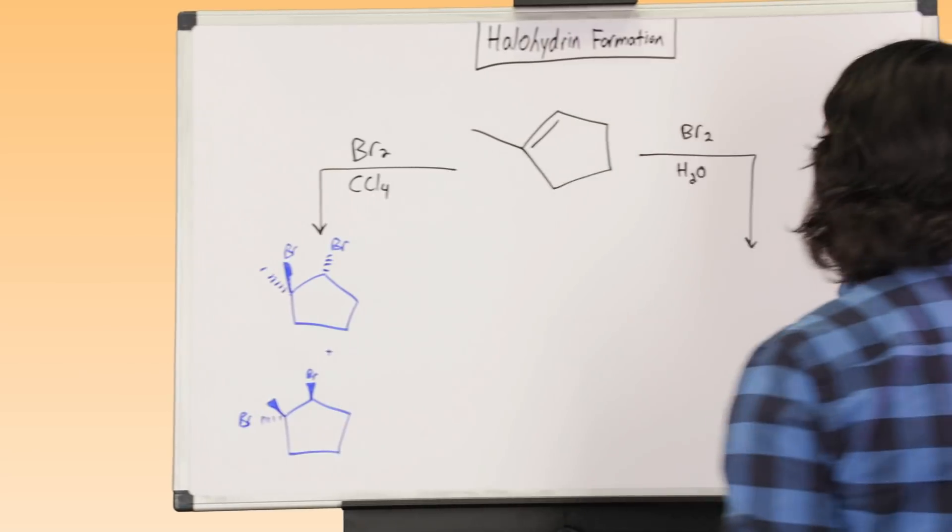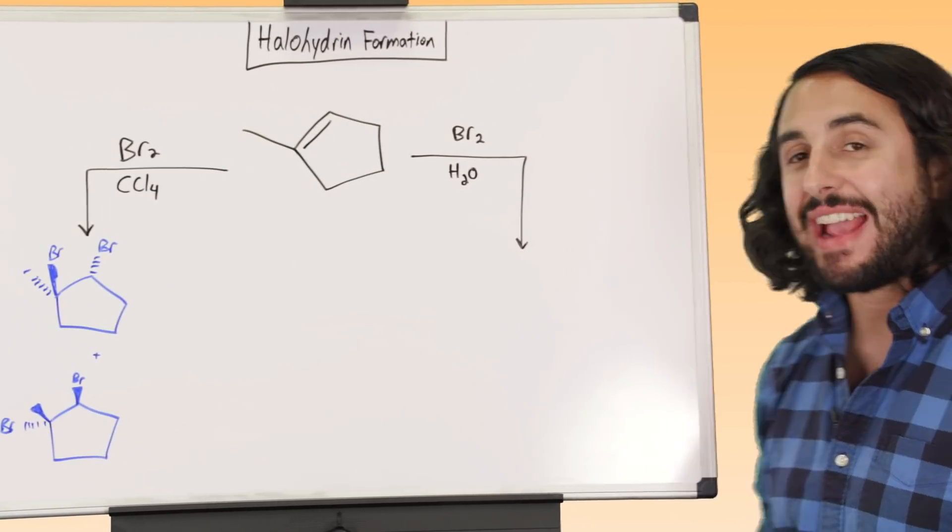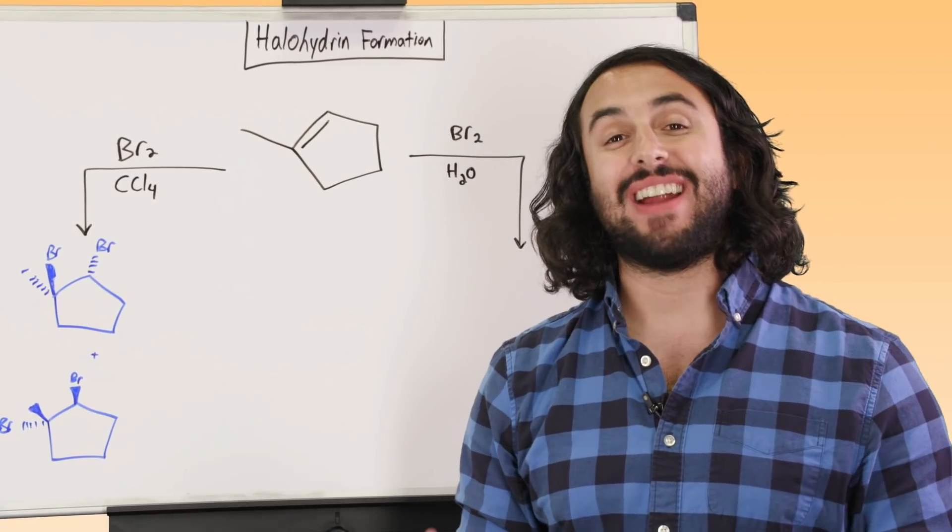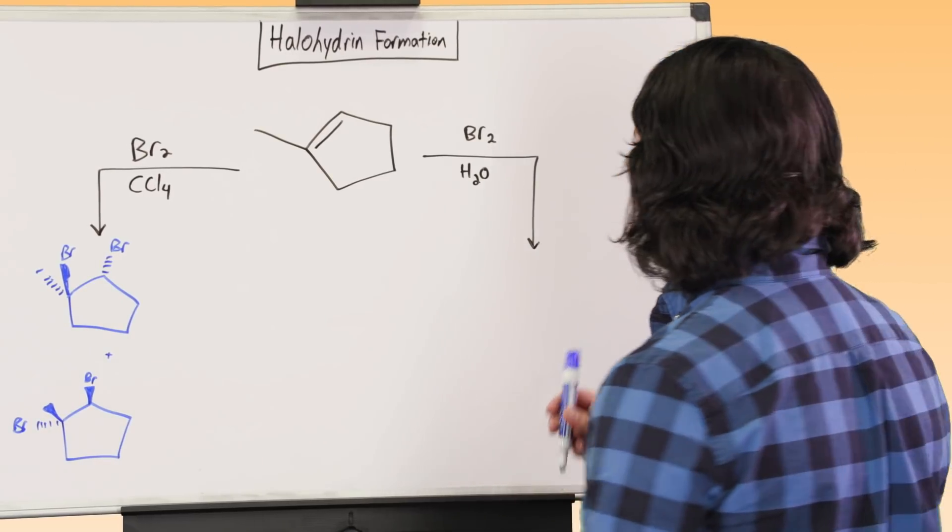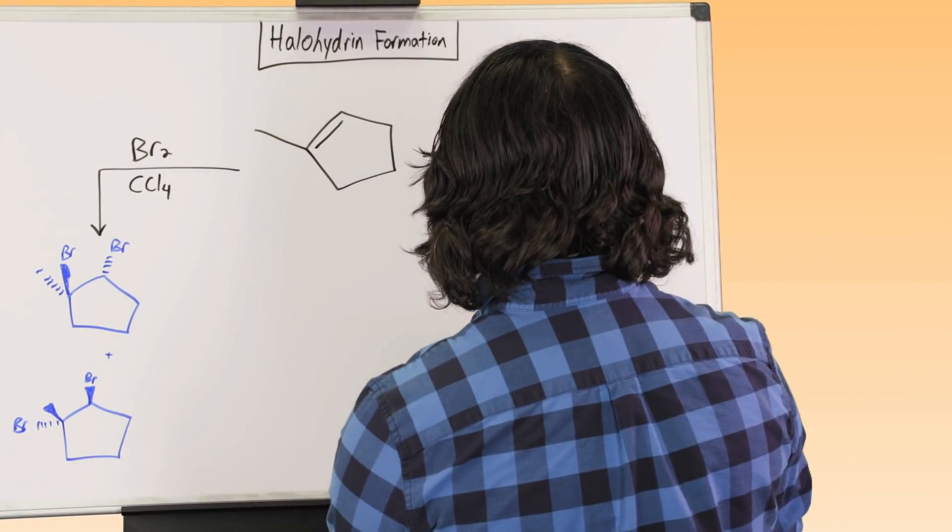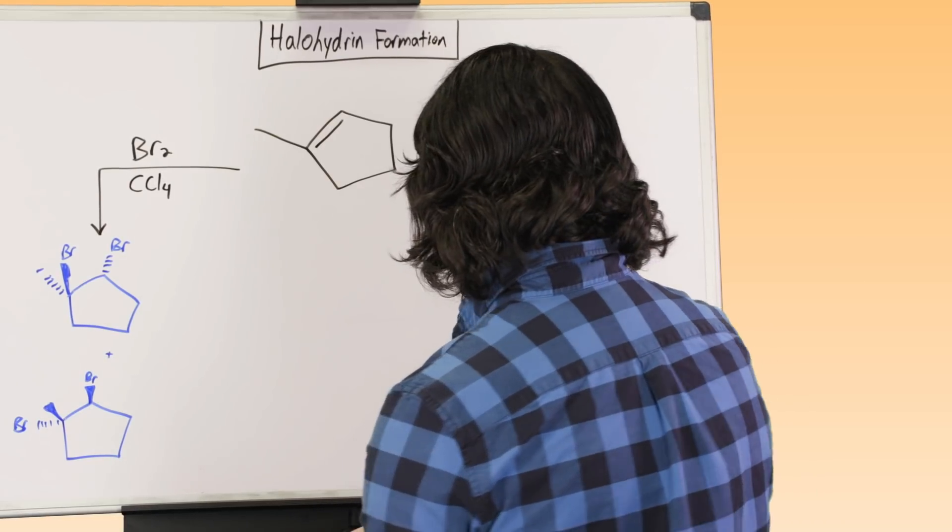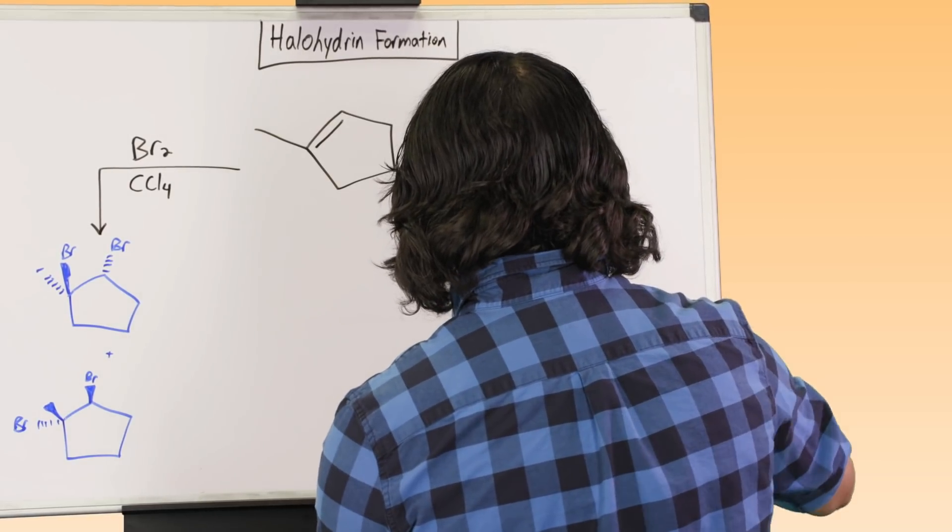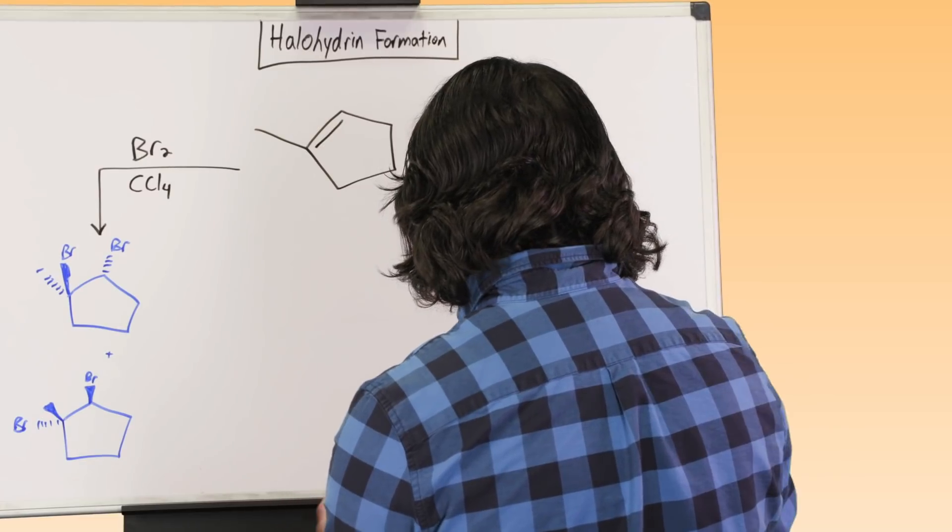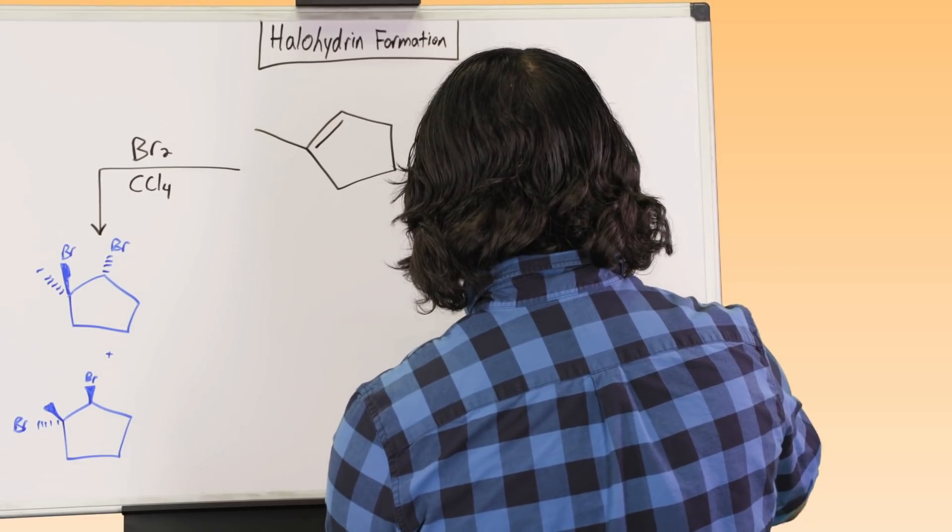But now, remember what we said, if we do this, but we run this in aqueous conditions, we're going to get our halohydrin. But let's take a look at one very important thing. Let's take a look at the bromonium intermediate now. If we're going to look at things mechanistically, let's say we are looking at this.